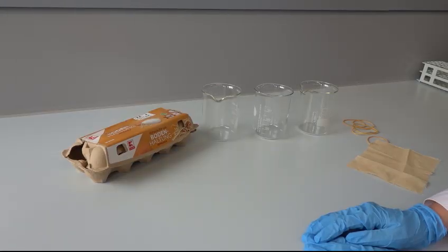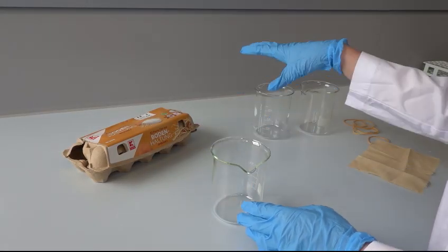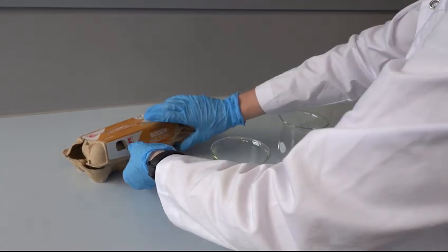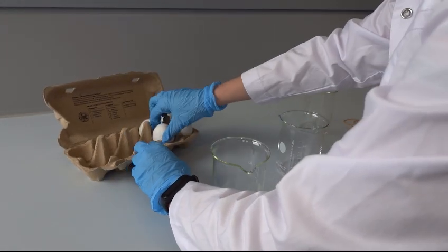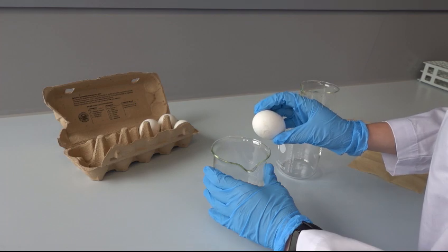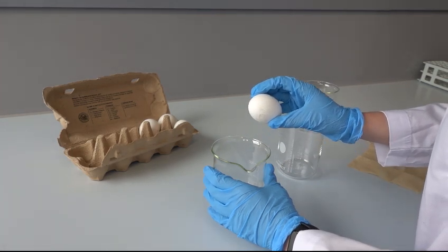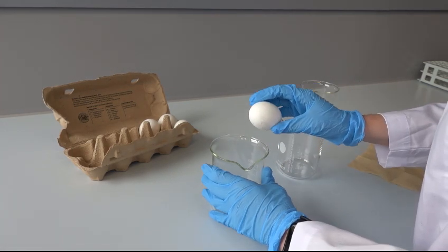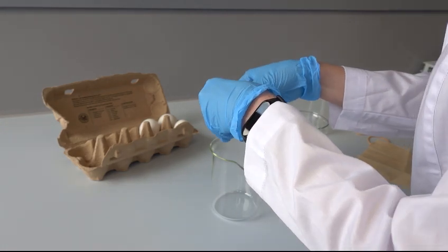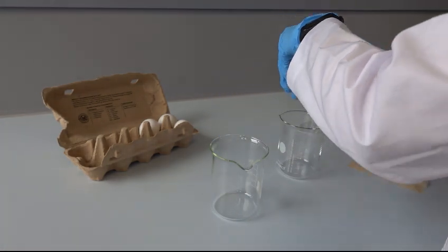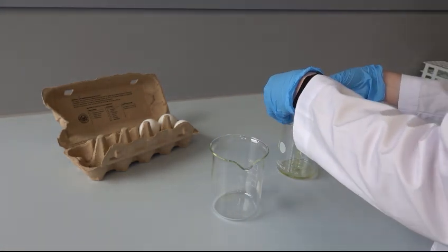Prepare fresh egg white before each course. Take a beaker and separate the egg white from yolk. The shell and yolk are discarded in a second beaker.